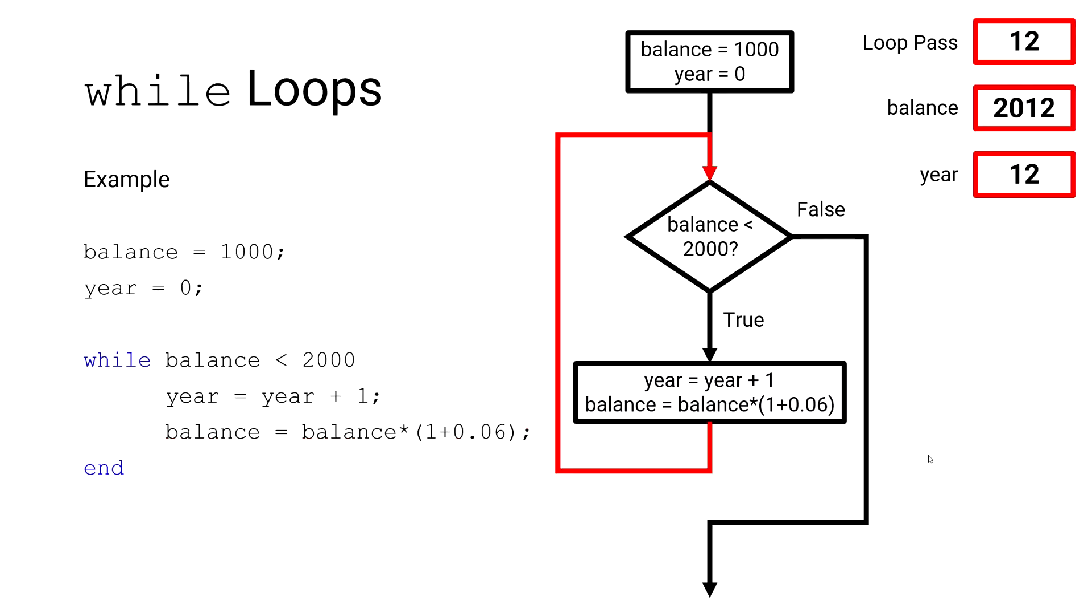Now this time, when we return to our logical expression, our current balance of $2,012 does exceed $2,000. This logical expression is false, and our loop now ends.